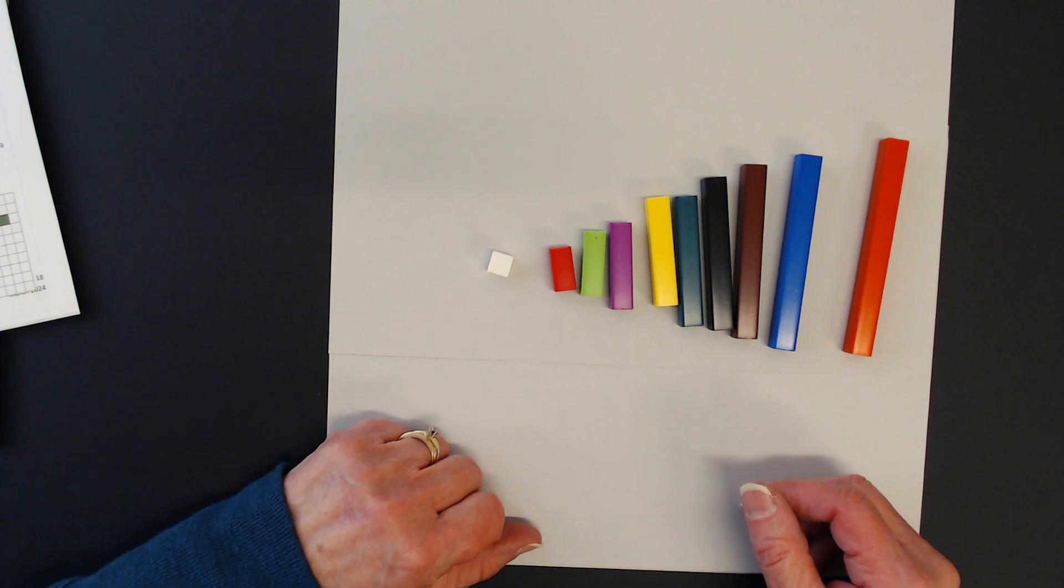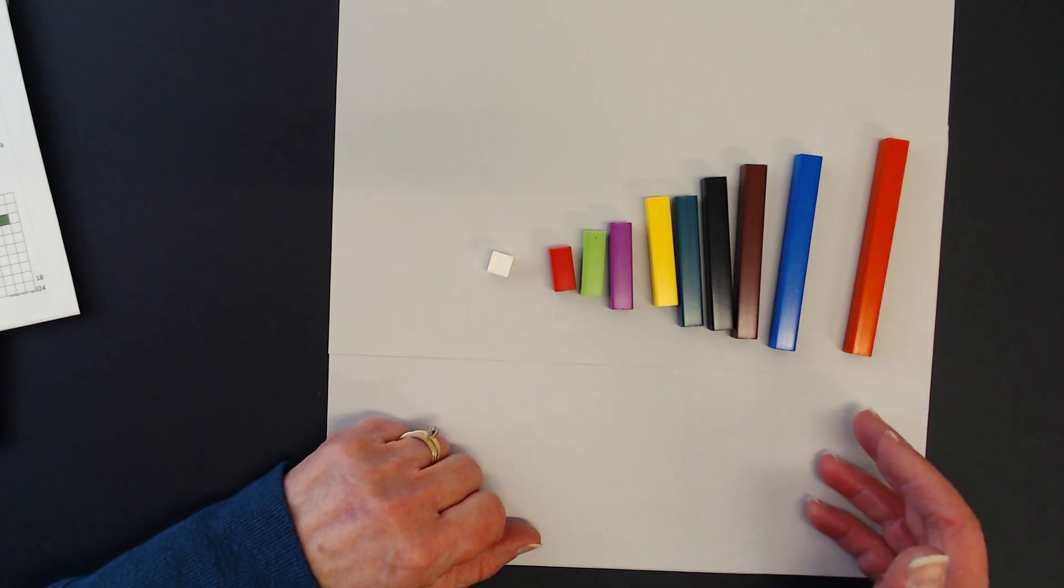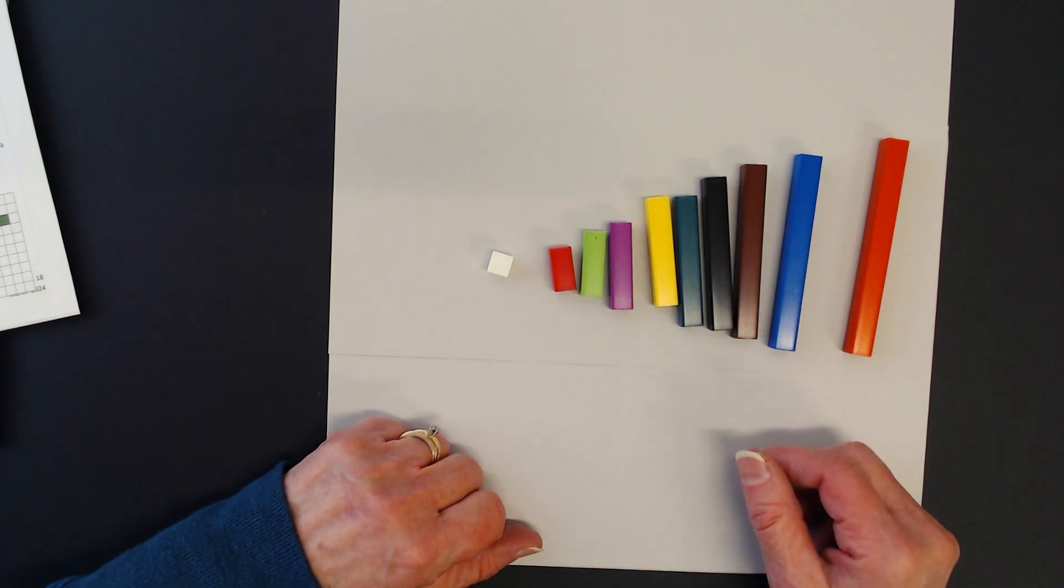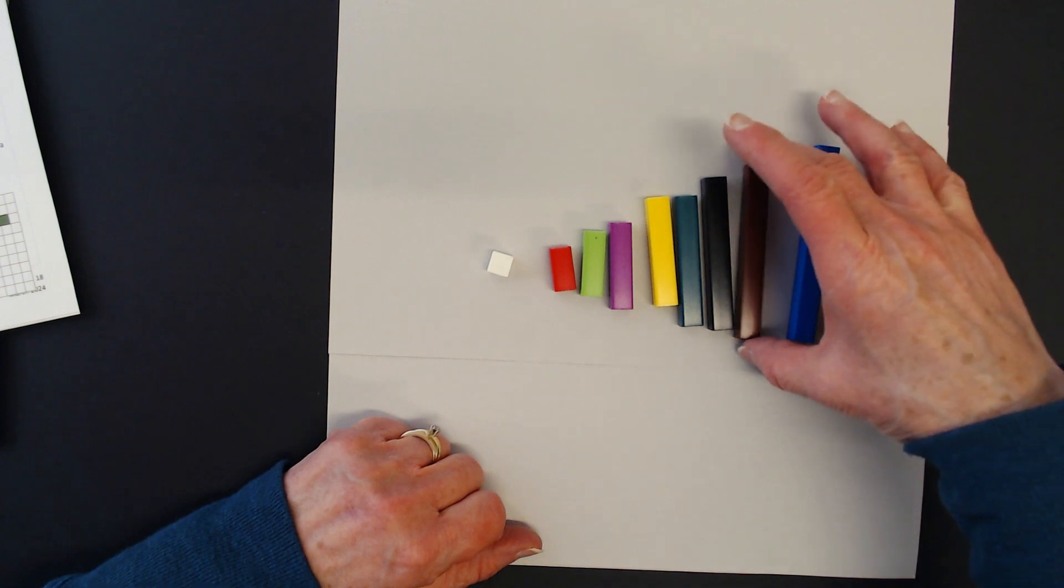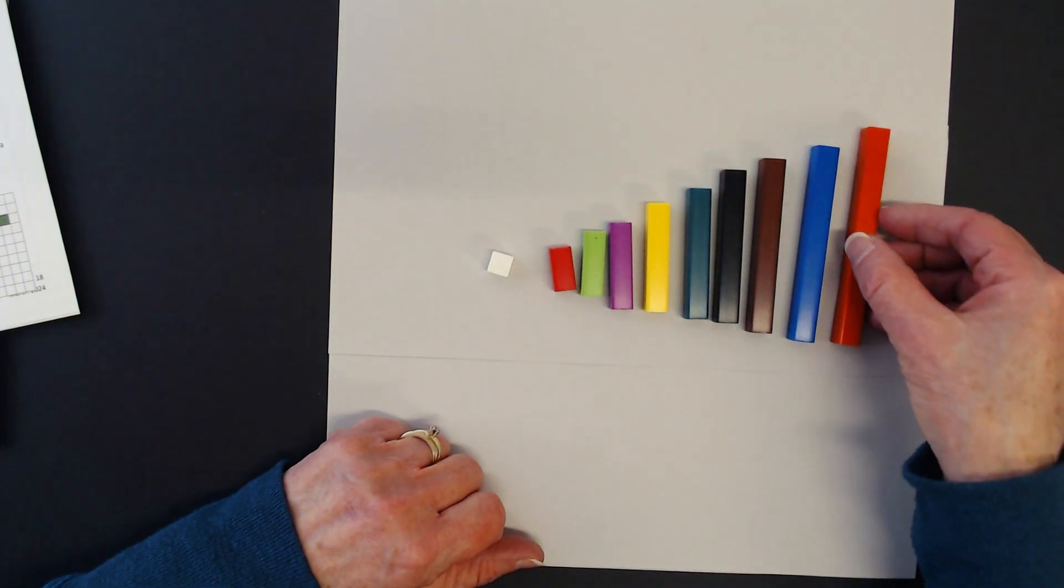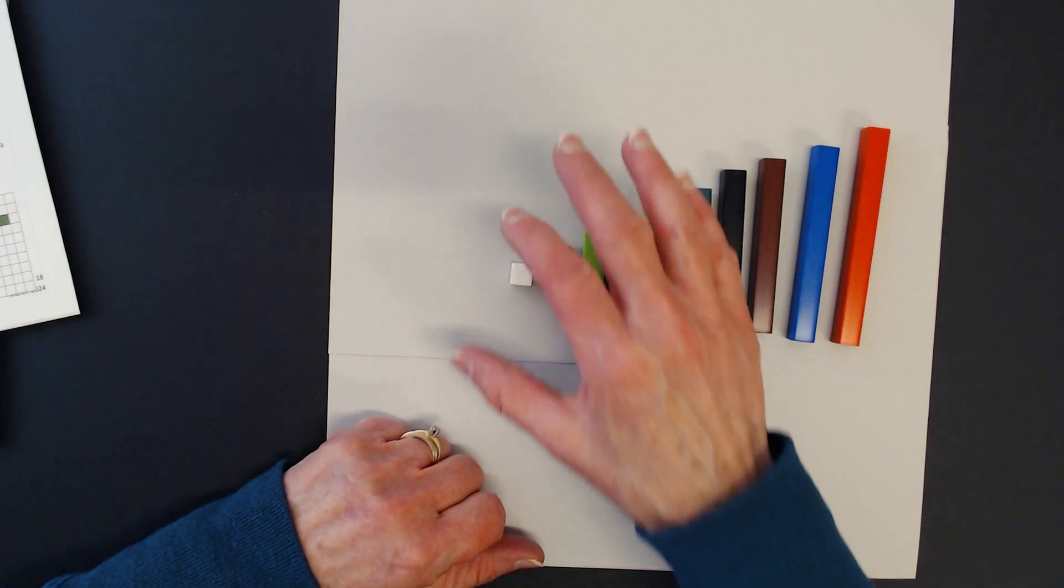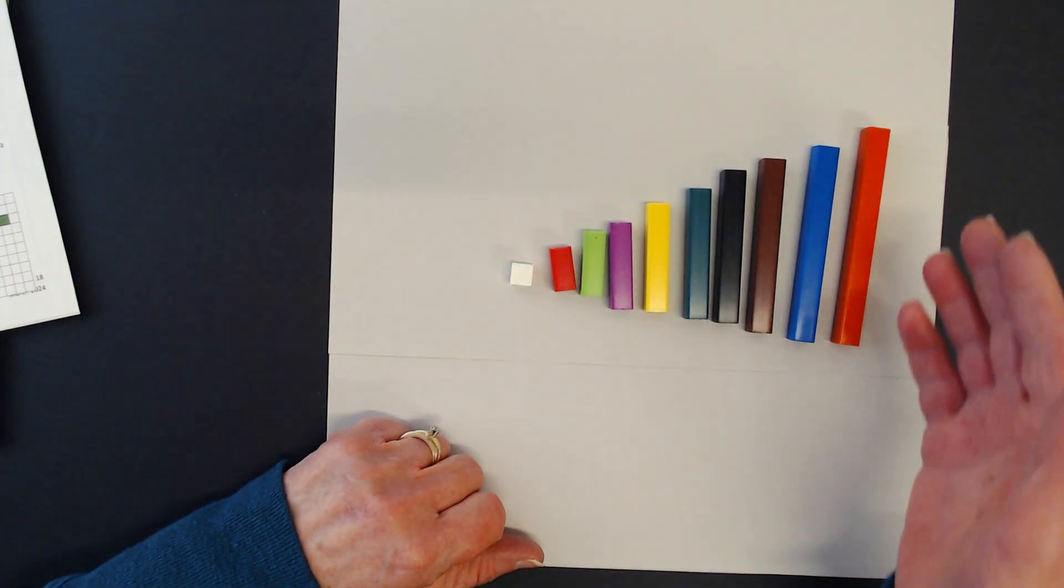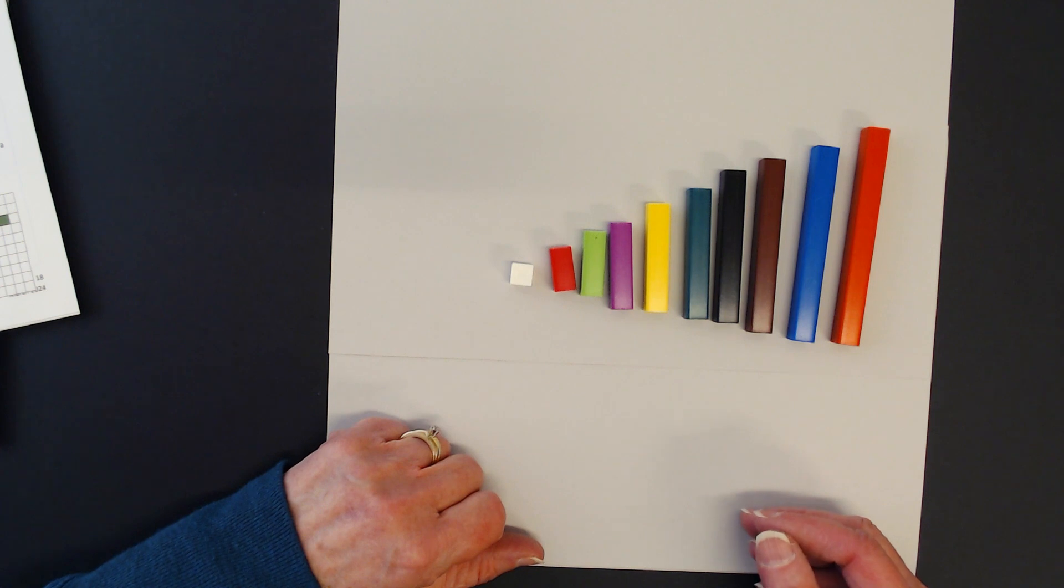These are Cuisenaire rods. We can use them in a variety of ways to work with math concepts. One of the things that's so great about them is that there are no markings on them, and so we can assign whatever value we want to them and use them in relation to one another.